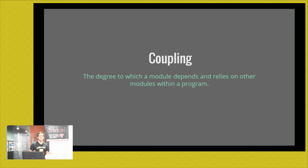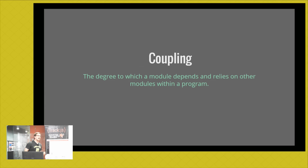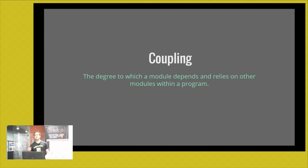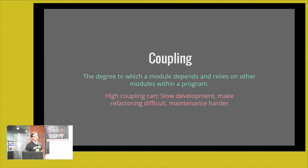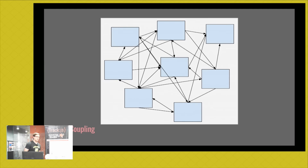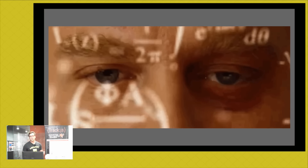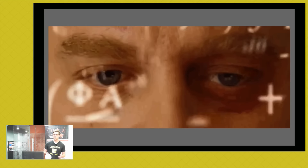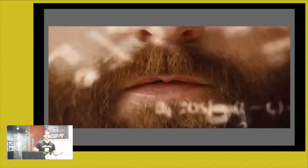The biggest objection I hear is that mixing HTML into JavaScript messes with separation of concerns. But I say it's actually doing the right thing with concerns — bringing together the concerns that matter. To explain why, we need to know two concepts: coupling and cohesion. Coupling is the degree to which a module depends on and relies on other modules. High coupling means a change in one module can cascade into unexpected changes in others, making debugging and refactoring very hard.